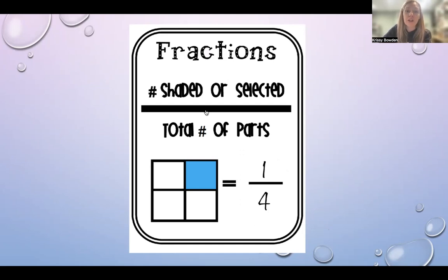Fractions. The number shaded over the total number of parts in all. Right here, you have one shaded out of four equal pieces in all. So we say one fourth.